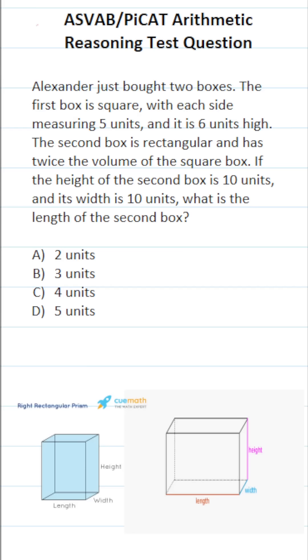The second box is rectangular and has twice the volume of the square box. If the height of the second box is 10 units and its width is 10 units, what is the length of the second box?